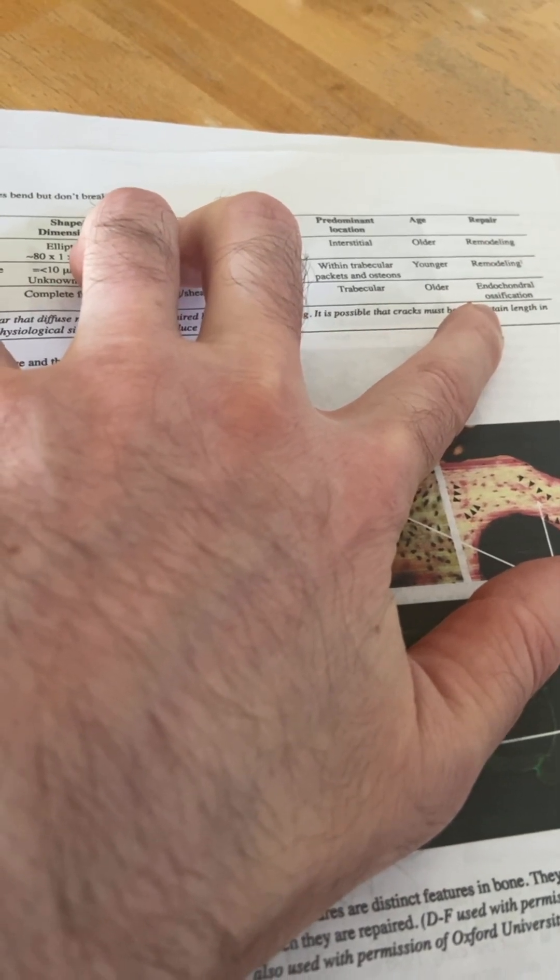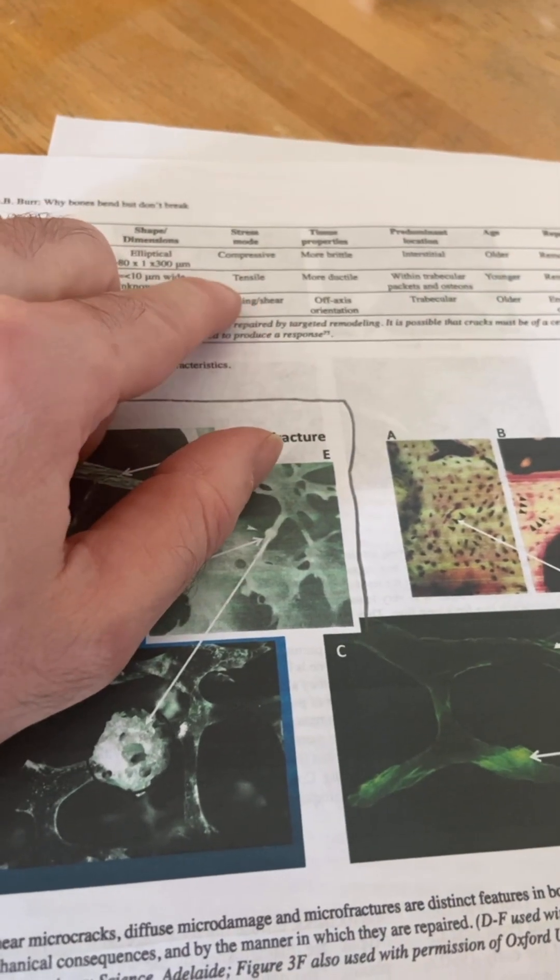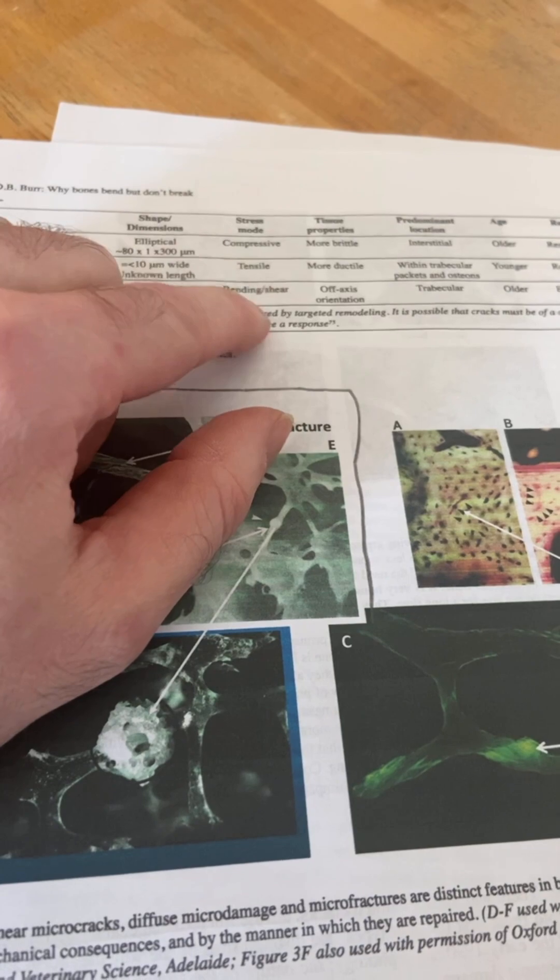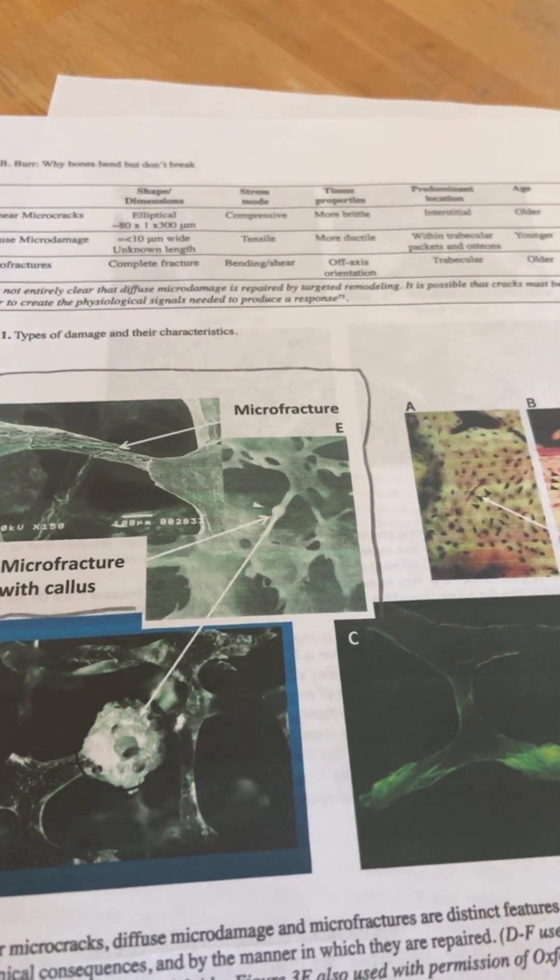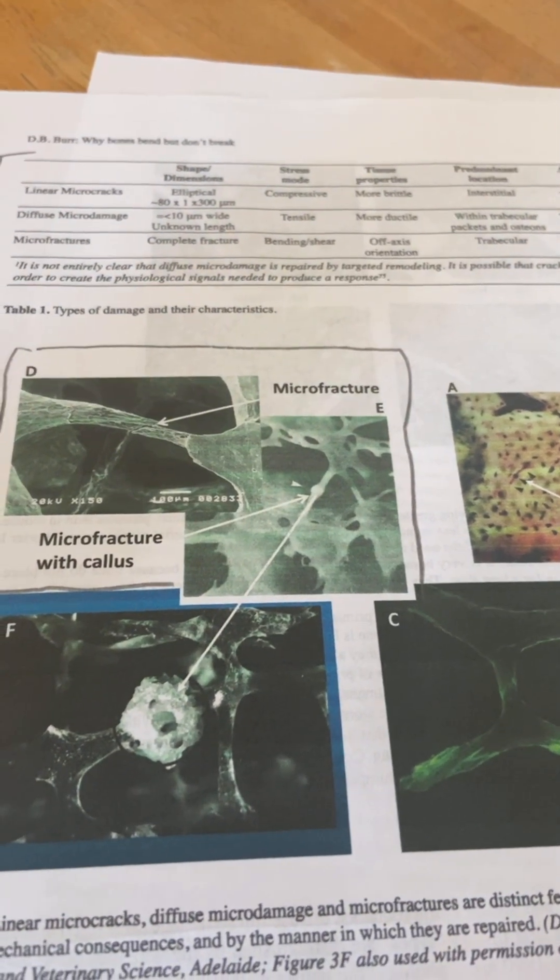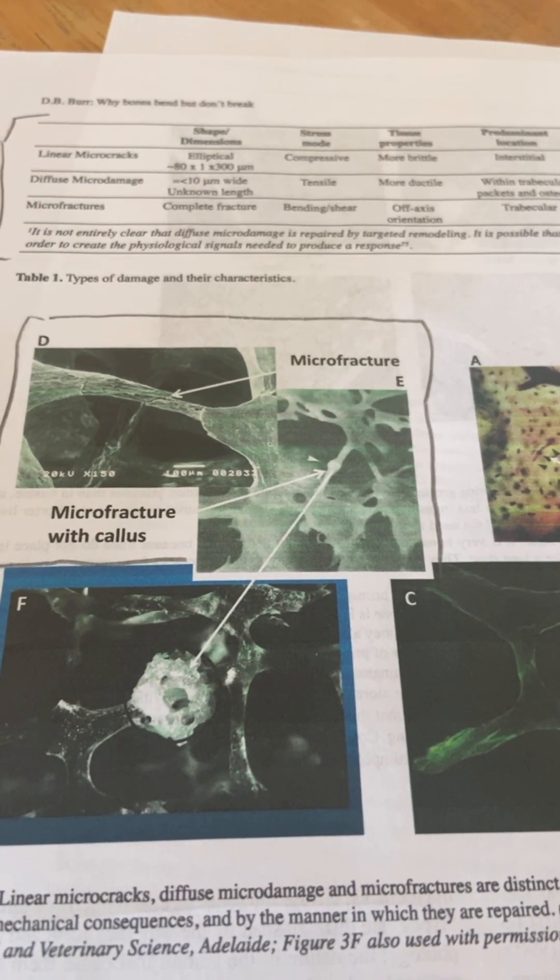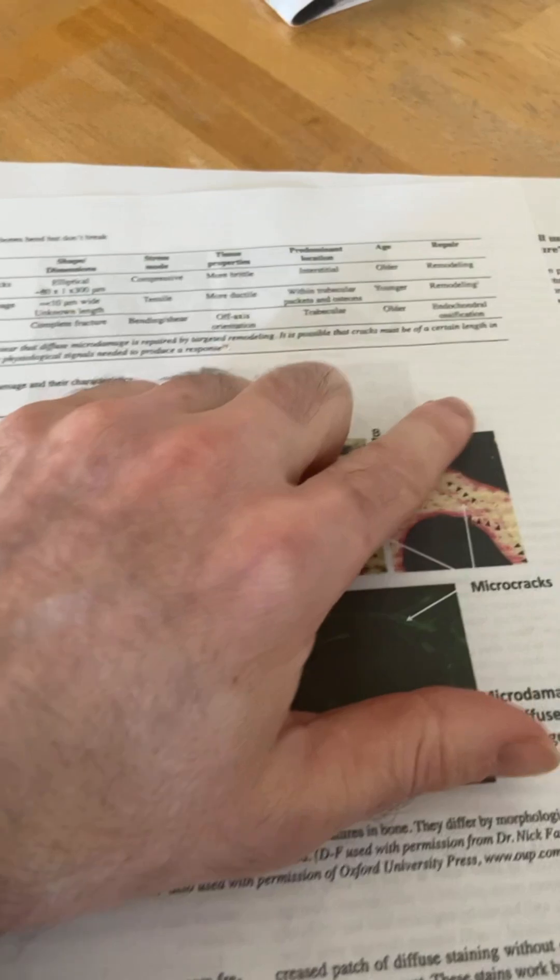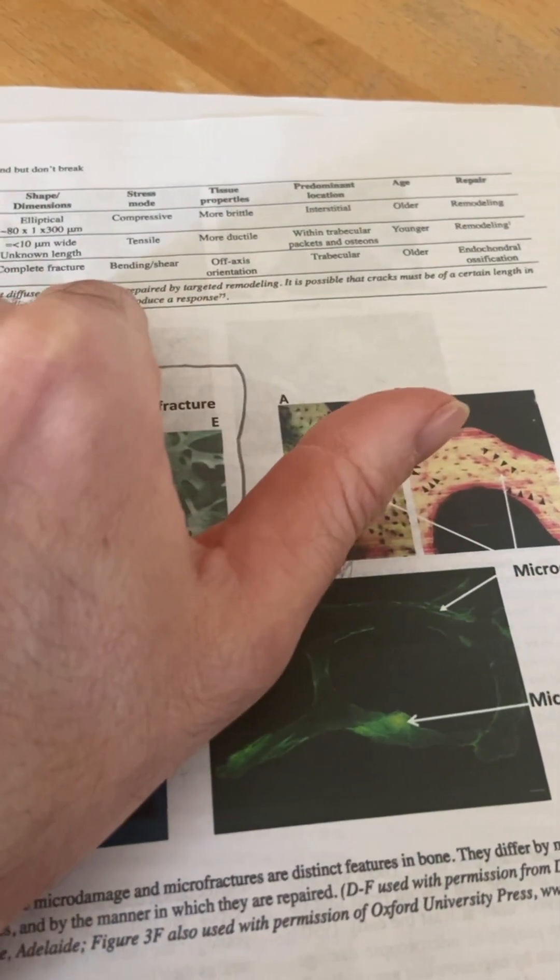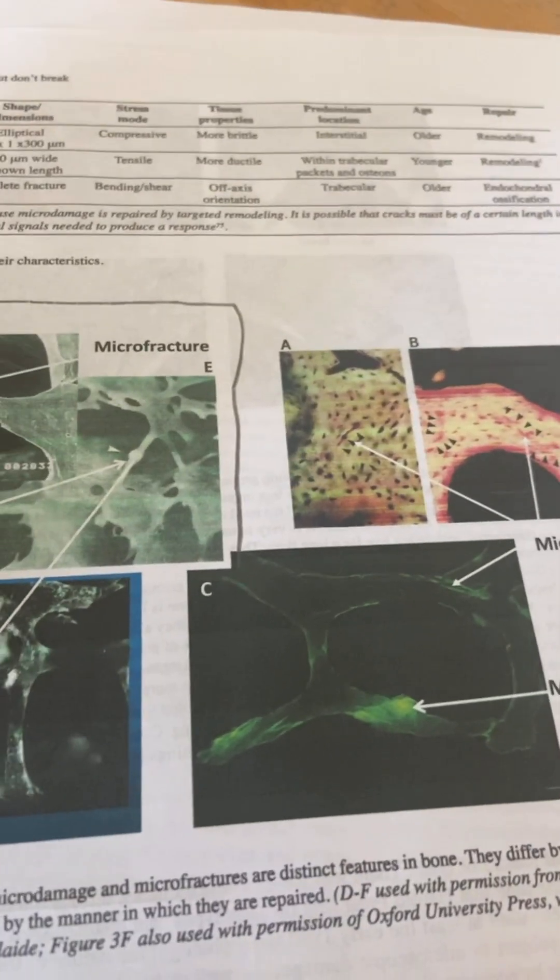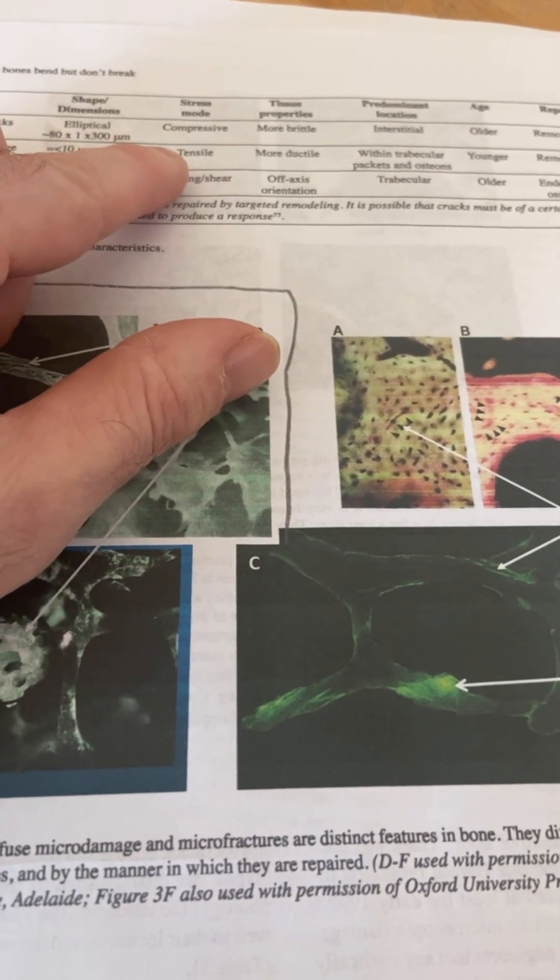These other things, diffuse microdamage and linear microcracks, are mostly tensile or compressive. But you see here the strain of bending and shear. So this means that I'm always talking about torsional loading, and torsional loading causes a lot of bending and shear forces. So this would be the best way to cause microfractures. And if microfractures could indeed get you taller, then you want the best way to cause microfractures, which I still believe is the torsional loading. And torsional loading would also cause compressive and tensile strain too.